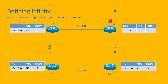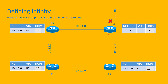Router 1 sends the update to Router 2, and Router 2 updates its hop count and sends the update to Router 4. Router 4 updates its hop count and sends the update to Router 3. Router 3 repeats the same steps and sends the update to Router 1, which sends the update back to Router 2. Router 2 now realizes the hop count is 16 and knows that it is infinity, so it removes the route from its routing table.